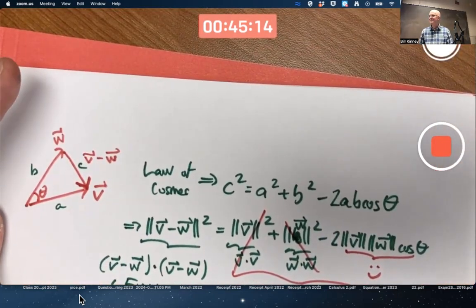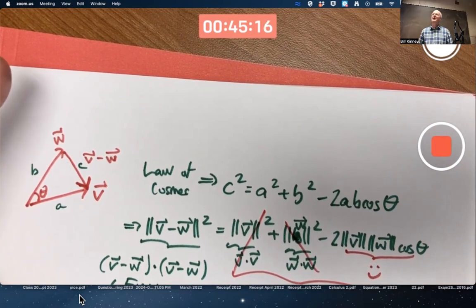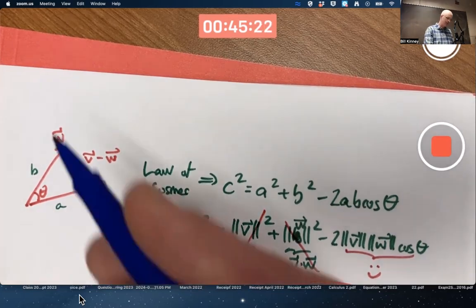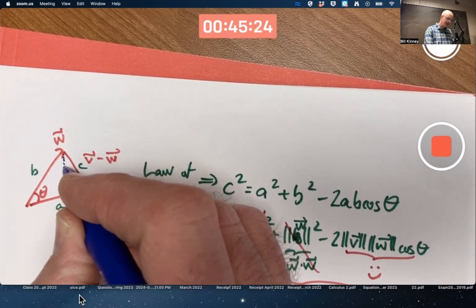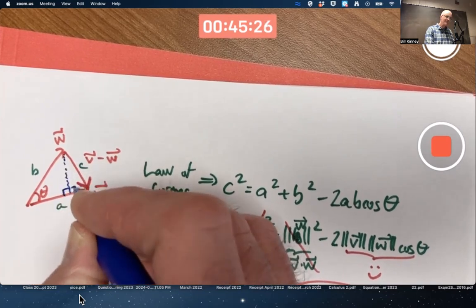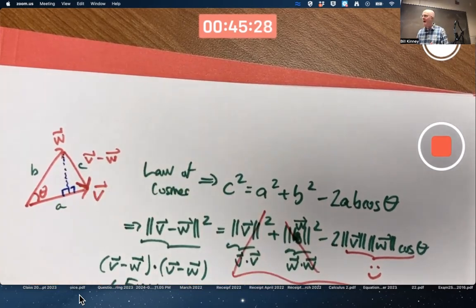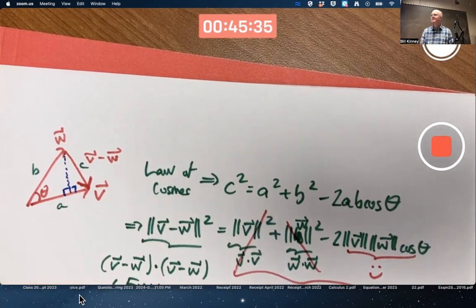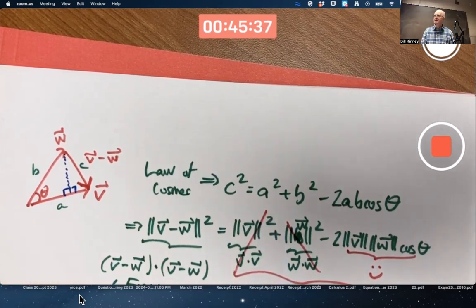That's a trigonometry subject. To tell you the truth, I don't remember how it's derived offhand. And probably it's a matter of breaking this triangle up into two right triangles and maybe applying regular right triangle trigonometry and maybe the Pythagorean theorem. That's my guess about how to derive the law of cosines, but I don't remember the details.